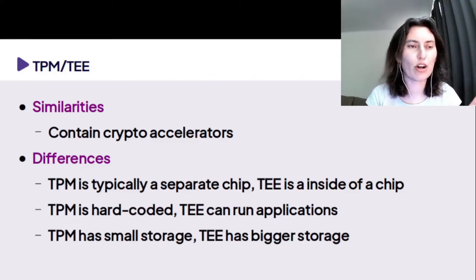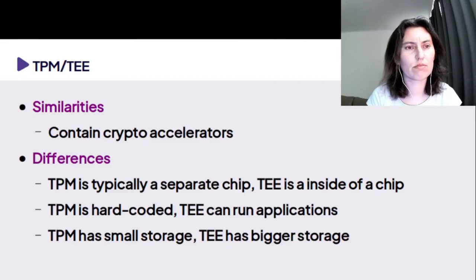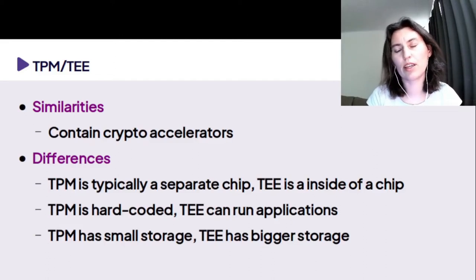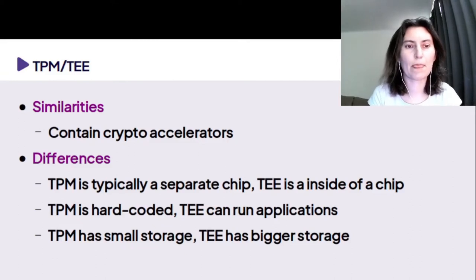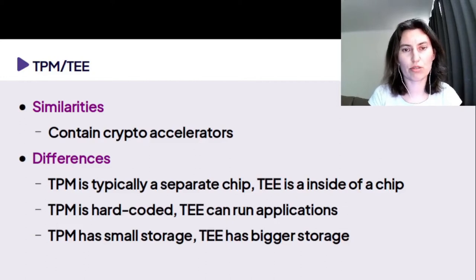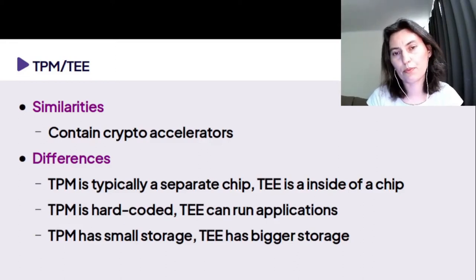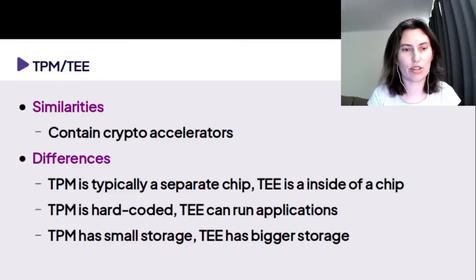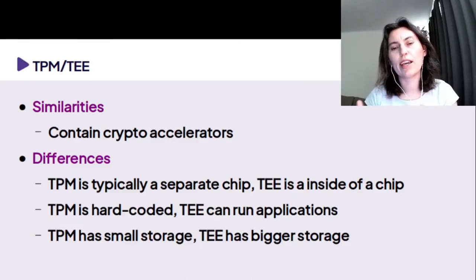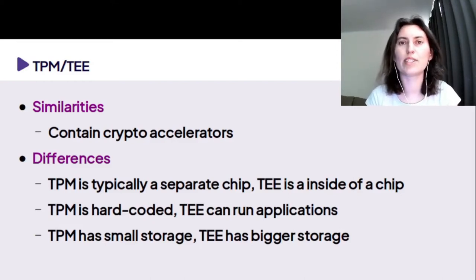Now, let's compare TPMs and TEEs. They both contain crypto accelerators typically, but they have differences. TPM is typically a separate chip; TEE is inside the main processor chip. TPM has its functionality hard-coded — it can do some operations it has been programmed to, and typically you cannot change those operations. In a TEE, you can run applications, so you can change the code. TPM has pretty small storage; in the case of TEE, you either have bigger storage or access to a separate storage attached to the secure world.